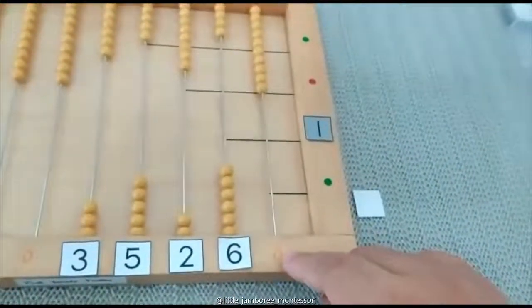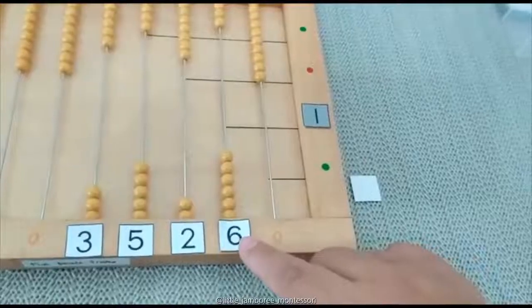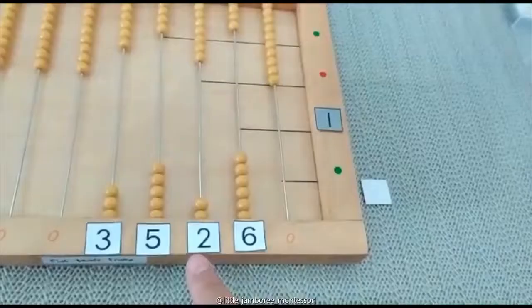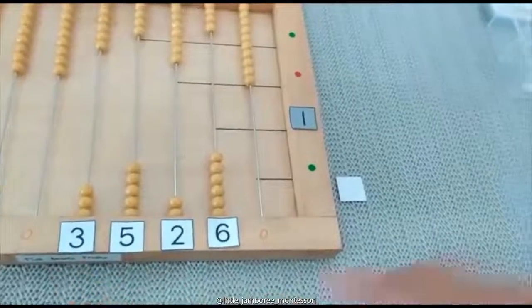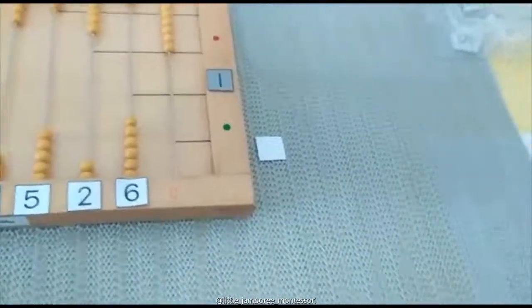Zero units, six tens, two hundred, five thousand, three ten thousand. So if you're going to write it down, you write zero, zero, six, two, five, three.